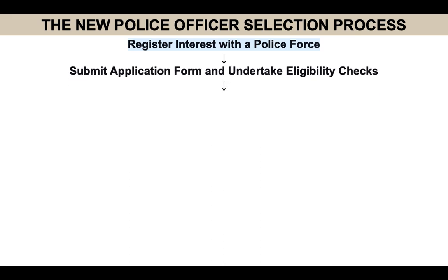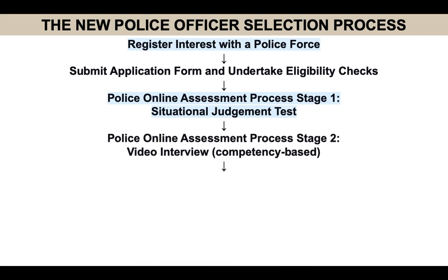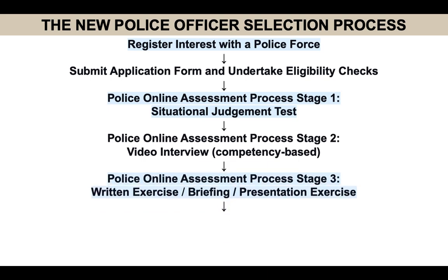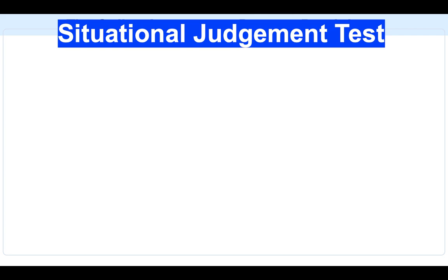Let's give a full overview of the new police officer selection process. You would register your interest with a police force, then submit your application form and undertake eligibility checks. You then progress through four stages of this new online assessment: Stage 1 is the situational judgment test. You need to pass that before progressing to Stage 2, which is the competency-based video interview. Stage 3 is the written exercise and the briefing and presentation stage. Finally, Stage 4 involves a force final interview, a job fitness test, biometric vetting, and drugs testing.